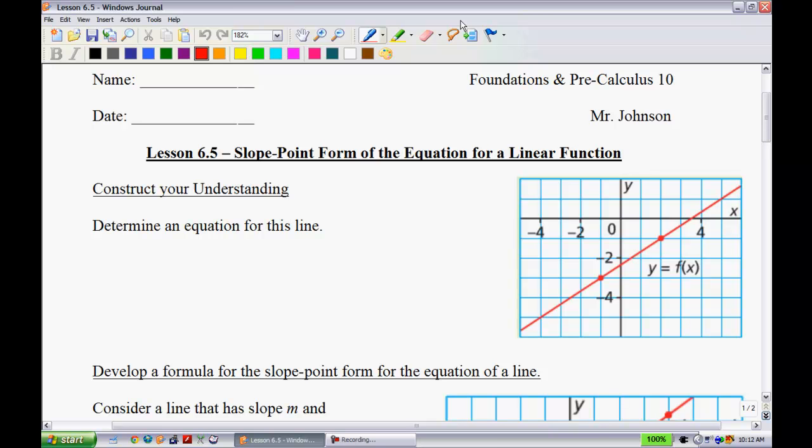All right, this is lesson 6.5, the slope point form of the equation for a linear function. What I want you to do to give you an idea of what this lesson is going to be about is, I want you to try to determine an equation for this line. Pause the video here and see if you can find an equation for this line using what you know about y equals mx plus b.